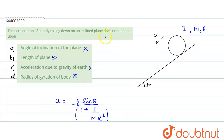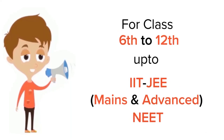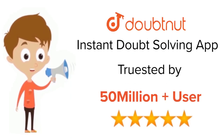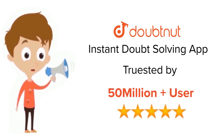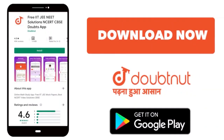The only correct option — the quantity upon which this acceleration does not depend — is option B, the length of the plane. Hope you understood the solution. Thank you. For class 6 to 12, IIT JEE and NEET level — trusted by more than 5 crore students — download the DoubtNut app today.